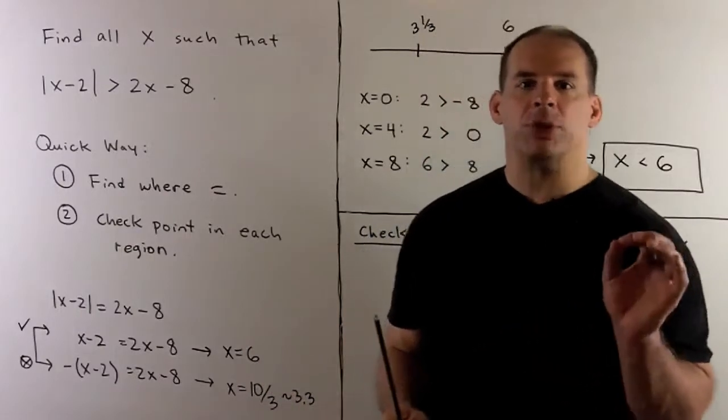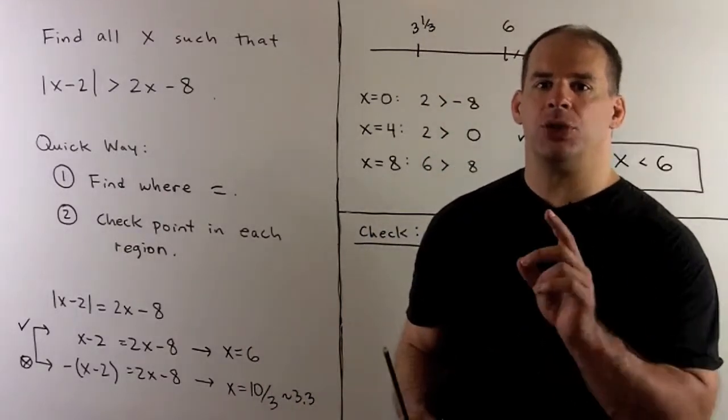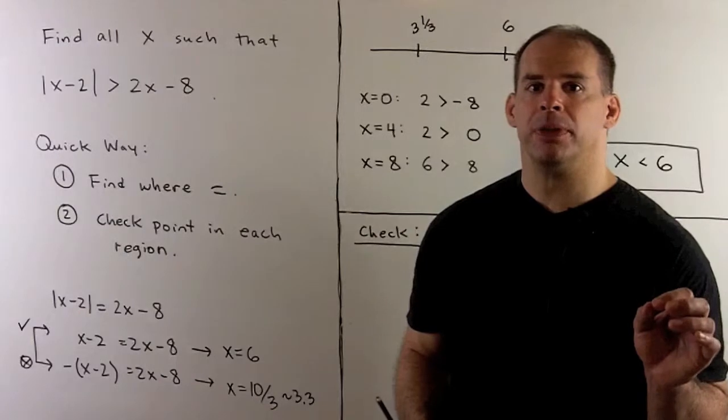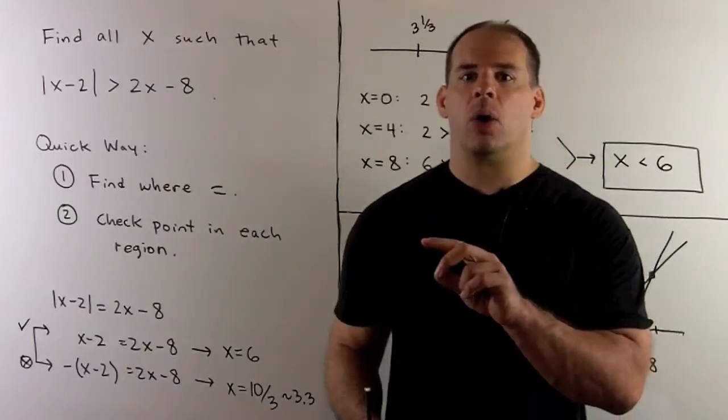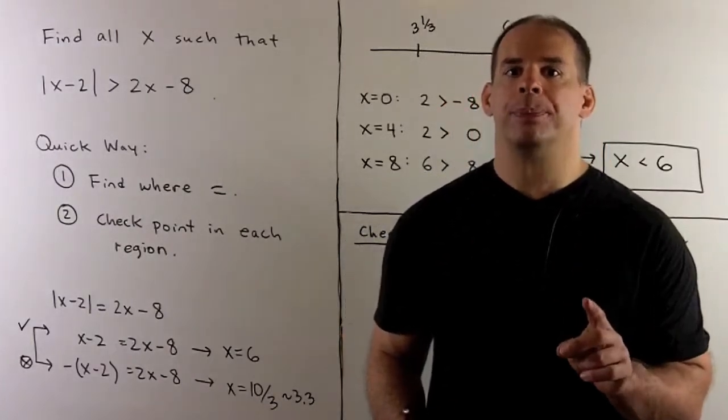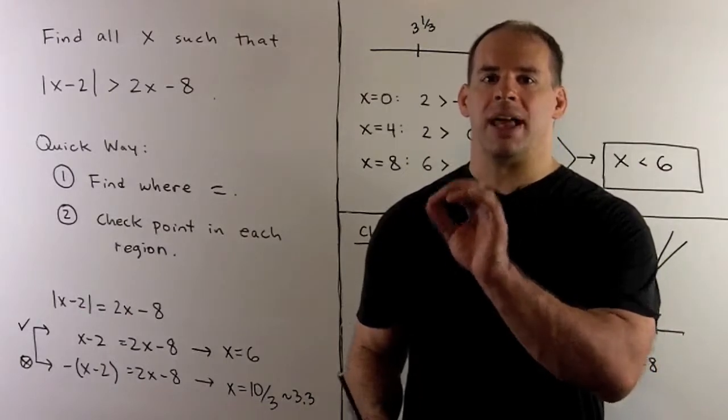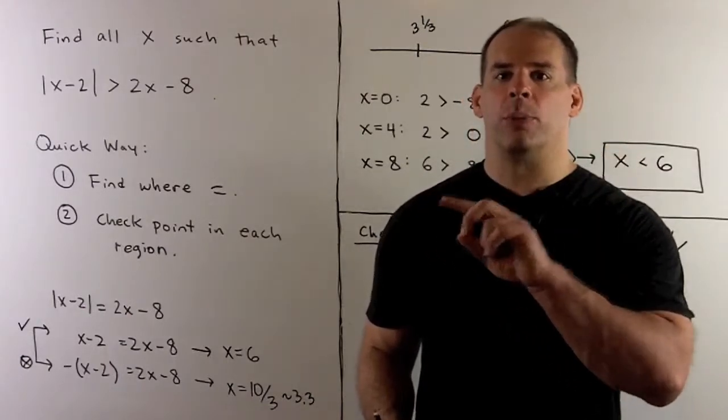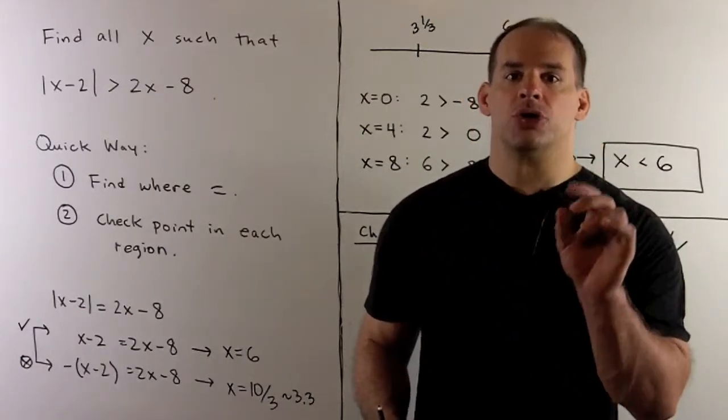Absolute value of x minus 2 and 2x minus 8 are continuous functions of x. If I want to know where one is greater than or less than the other, I can't go from less than to greater than without going through a point where we're equal.